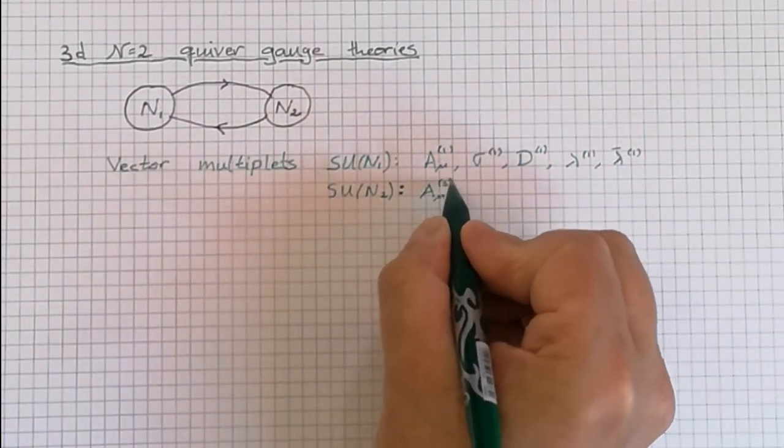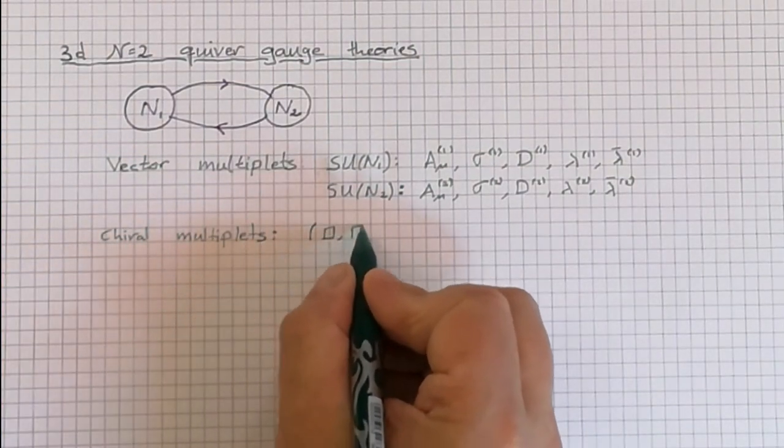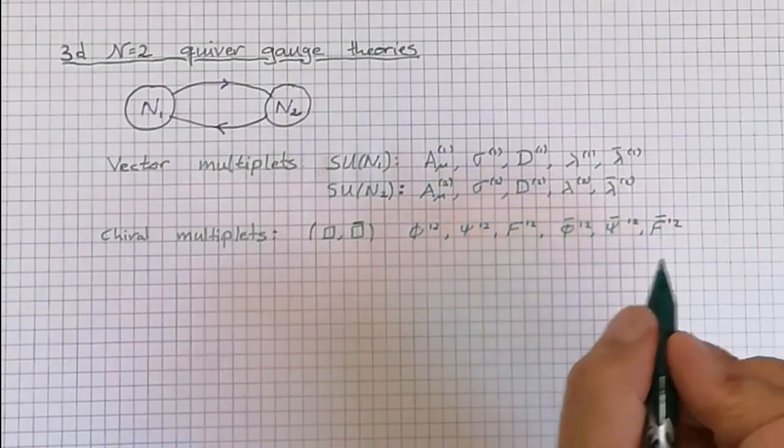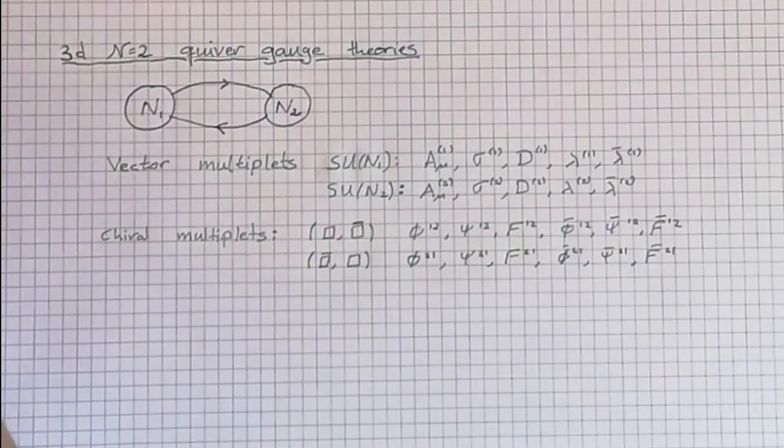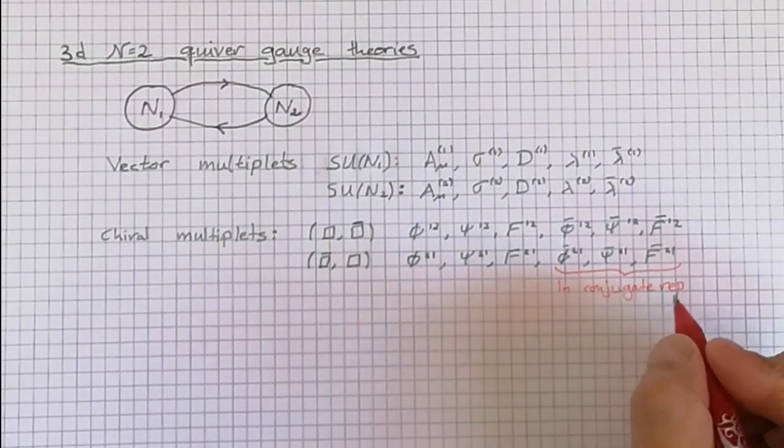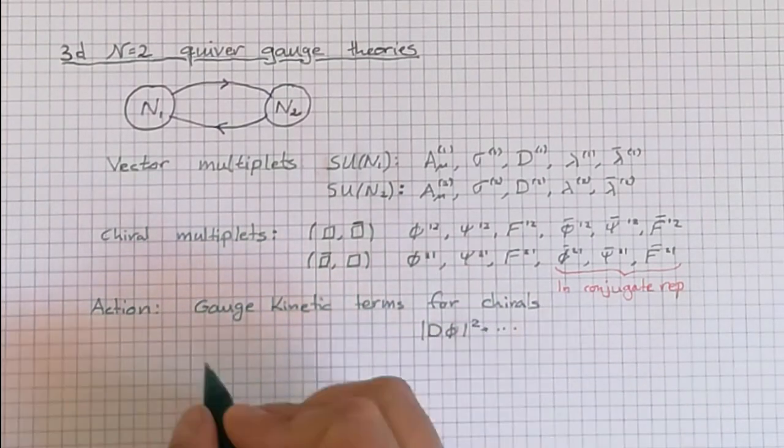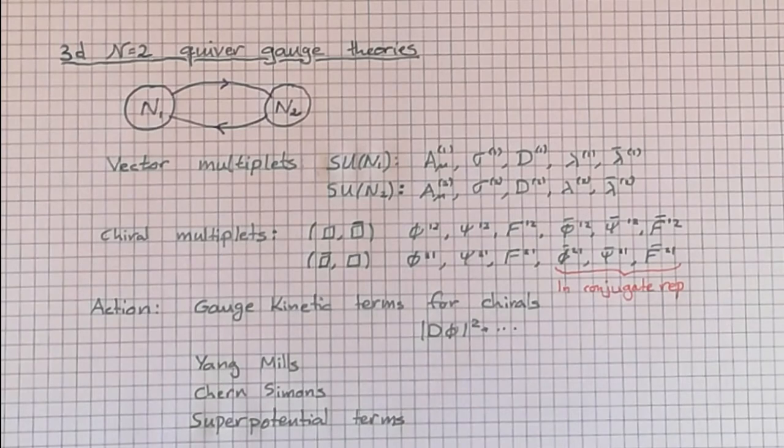Sigma and D are auxiliary fields. And then there are the gluinos, lambda, and lambda bar. The edges are chiral fields in the bifundamental representation. They contain the scalar phi, fermion psi, auxiliary field F, and also the anti-chiral that we need in order to write down an action, which are not represented in this graph. They are, of course, in the conjugate representation, such that we can get singlets. The action is not written explicitly, but it should include a kinetic term for the chiral fields, the usual gauged chiral Lagrangian. And it can include a Yang-Mills term, Chern-Simons terms, both for the gauge fields, and there can be superpotential terms. None of these terms are specified in the diagram. They are important to define the theory. But for our purposes today, which is classifying supersymmetric loop operators, this doesn't play any role.